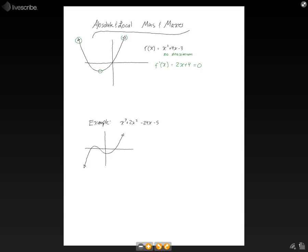So 2x plus 4 equals 0. Subtract 4 from both sides. Negative 4 equals 2x, divide through by 2, and get x equals negative 2. And that gives us the x-coordinate of our minimum.